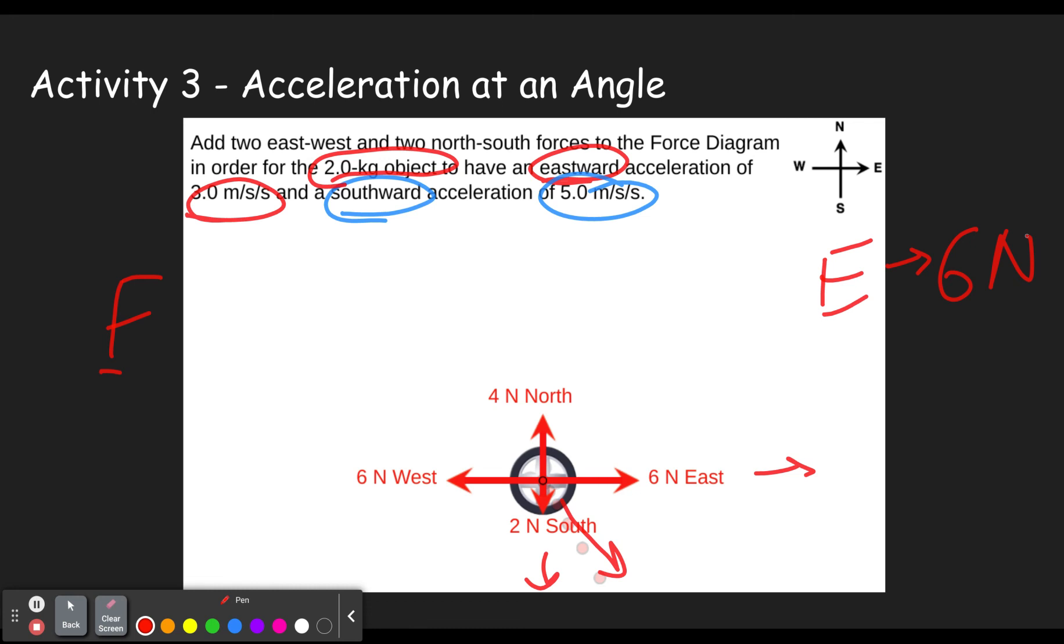And in the southward direction, let's make that blue. In the southward direction, we're going to need five times two, two mass, five acceleration, two times five gives us 10. And the units work out to give us newtons. So that means keep in mind that our southward velocity will need to be 10 bigger than our northward velocity. So if our northward is four, this one would have to be 14. And here, the eastward needs to be six bigger than the westward.